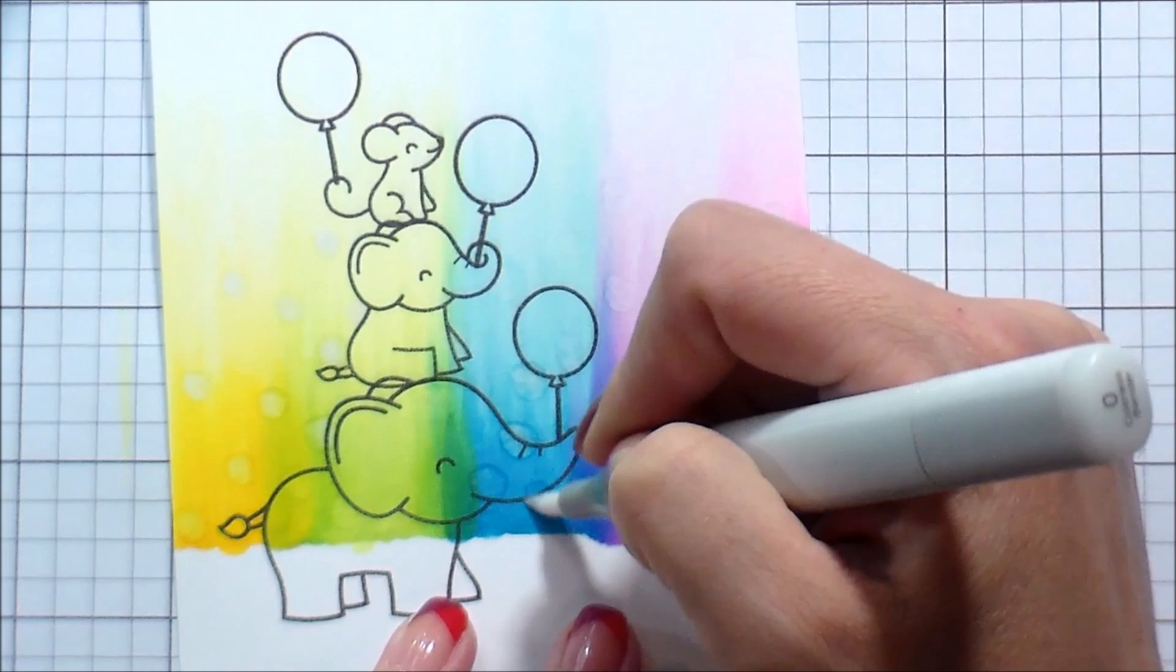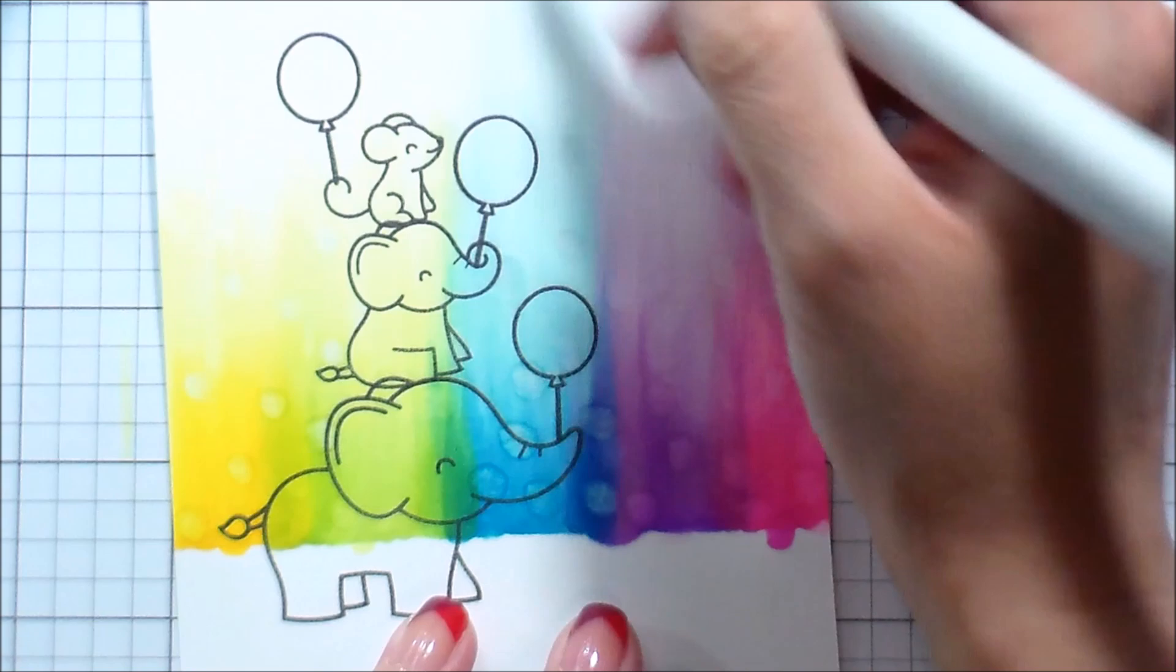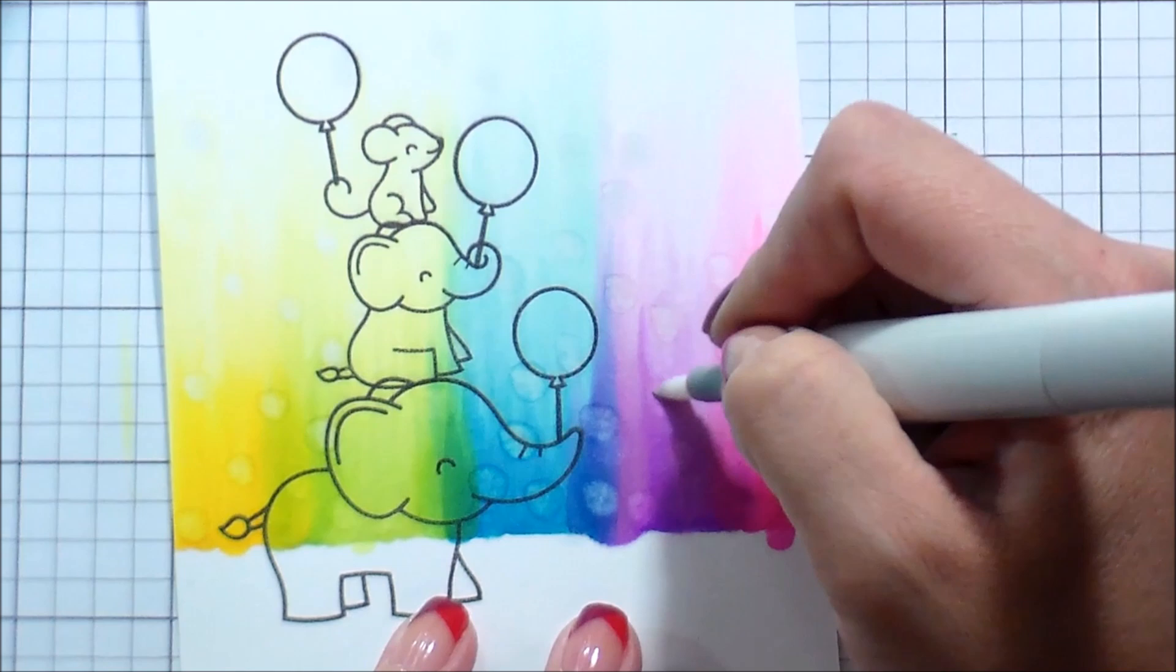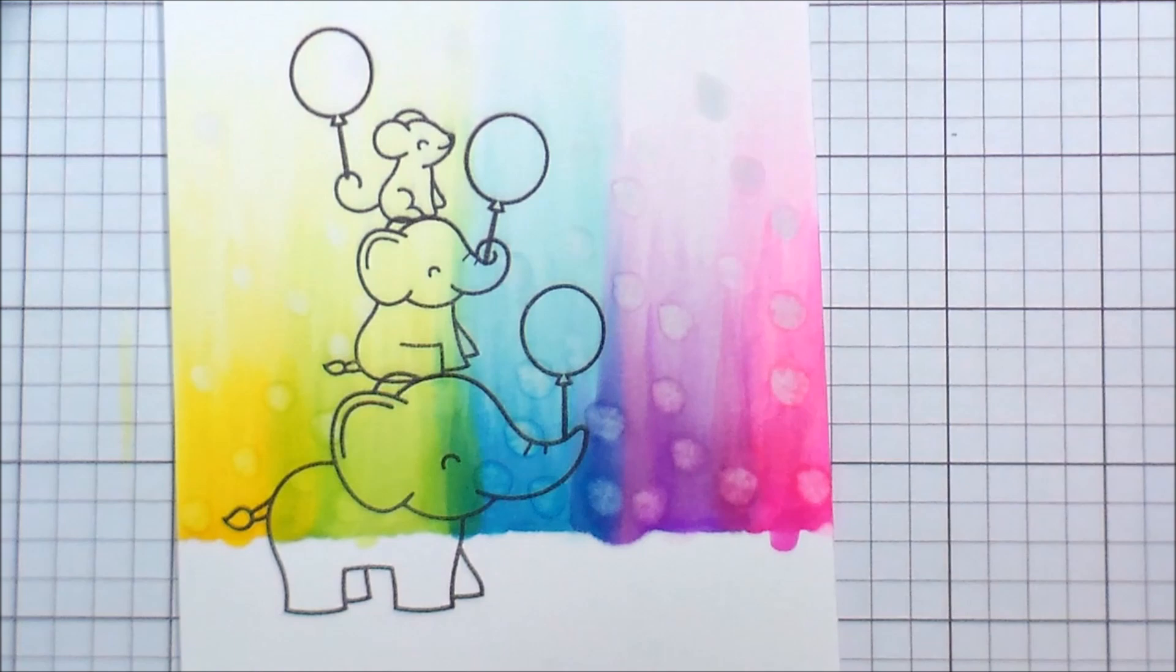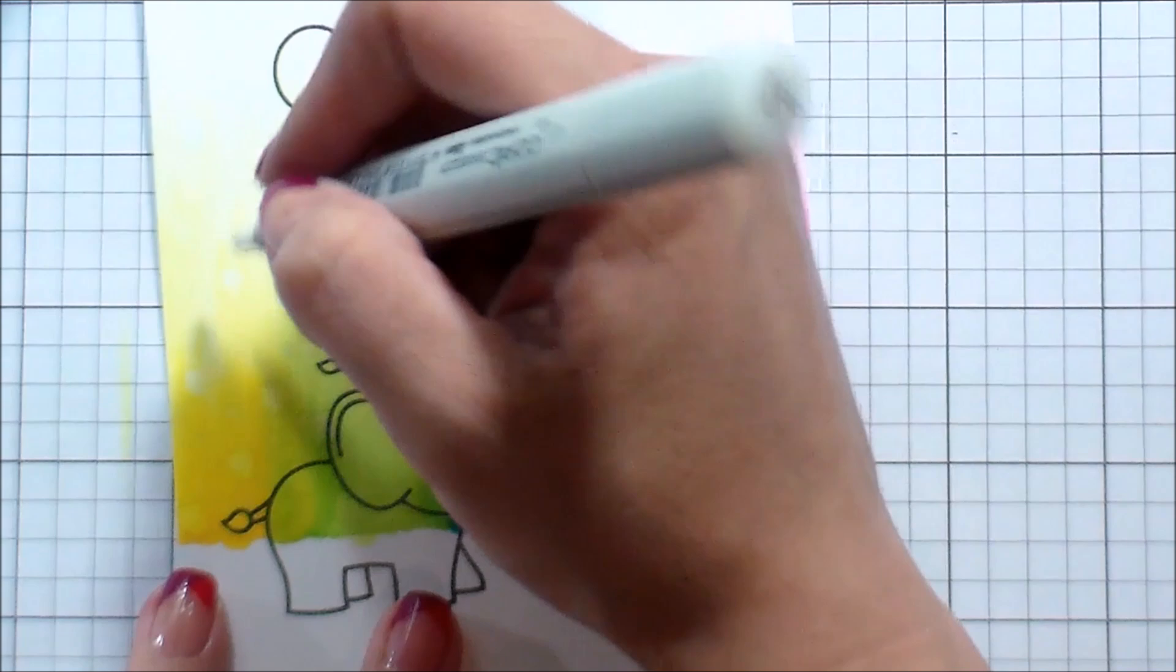Basically just to get a pattern going, there is not a right or a wrong way to do this. Once I have them down, some of them I'm going to go back in and go over. If you do it one time and they're not light enough for you, go over them again. The way the colorless blender works is it does not erase the ink. It pushes it out to the edges.